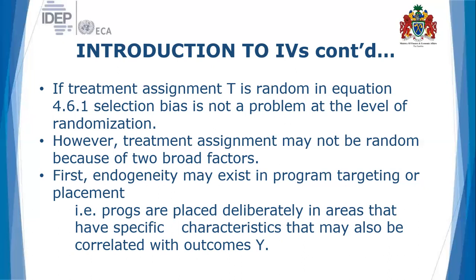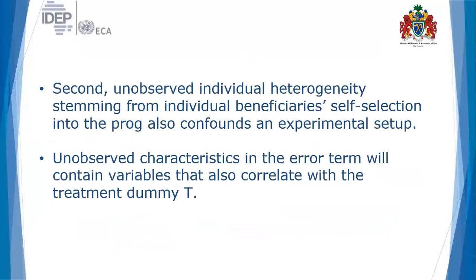Second, unobserved individual heterogeneity stemming from individual selection into the program also confounds an experimental setup. These unobserved individual characteristics of beneficiaries can affect the evaluation process. Observed characteristics in the error term will contain variables that also correlate with the treatment dummy variable T, such that the covariance between the two is not zero.